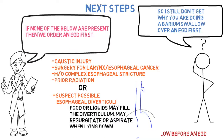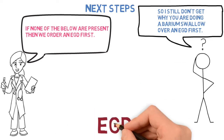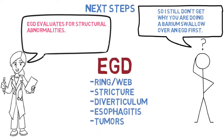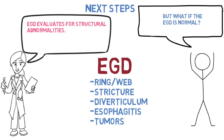If none of those conditions are present, we order an EGD first. We're looking for structural abnormalities: rings, webs, strictures, diverticulum, esophagitis, and tumors. But what if the EGD is normal?